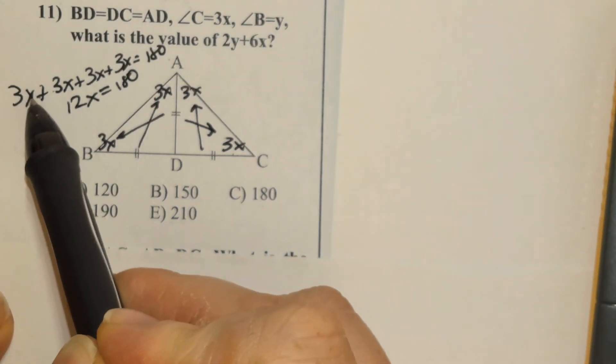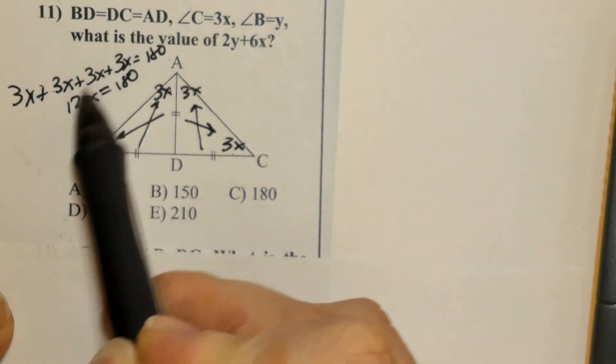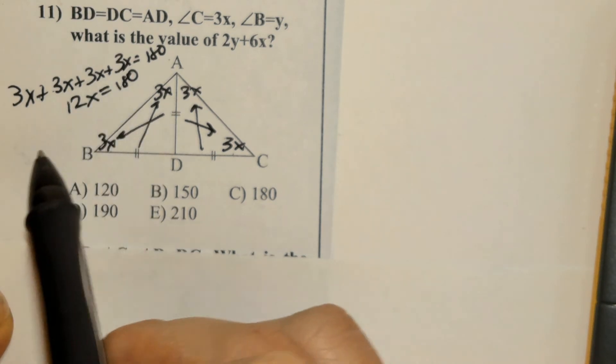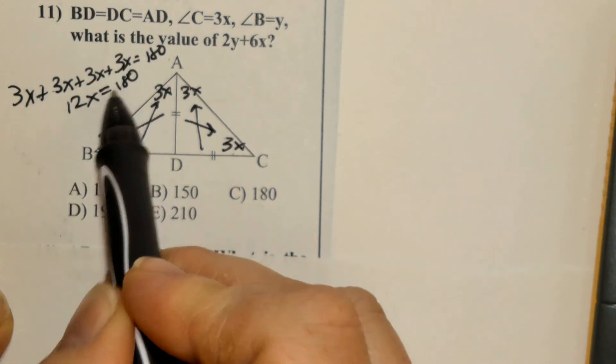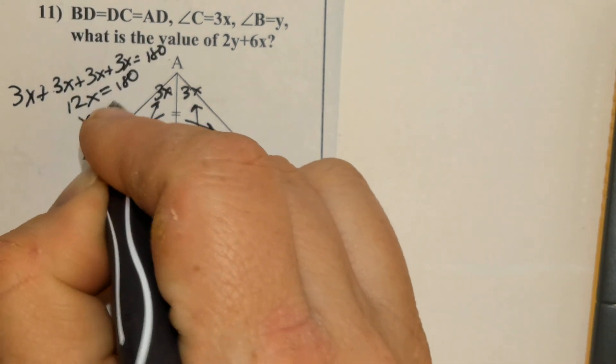Adding up like terms, 3, 3, 3, and 3 is 12x equals 180. Grab a calculator and take 180 and divide it by 12. You end up with 15.